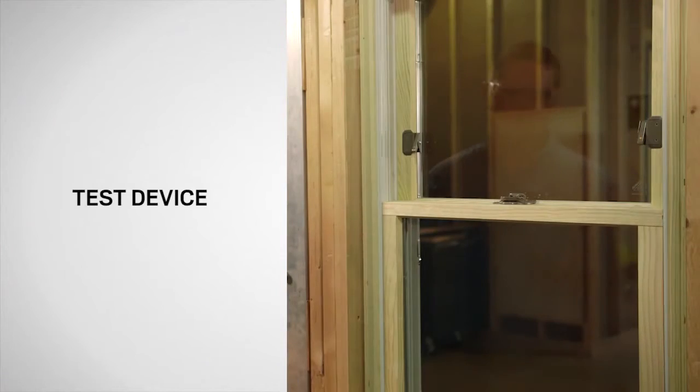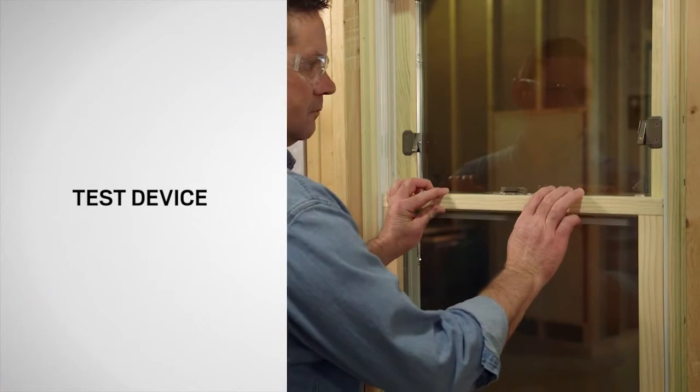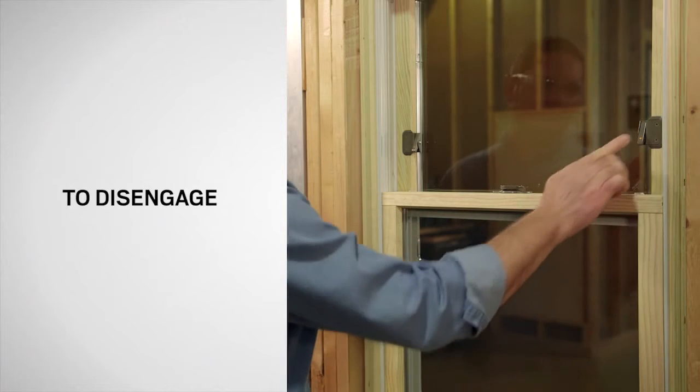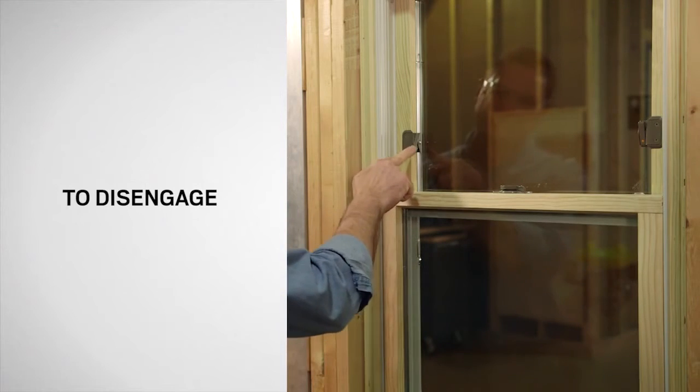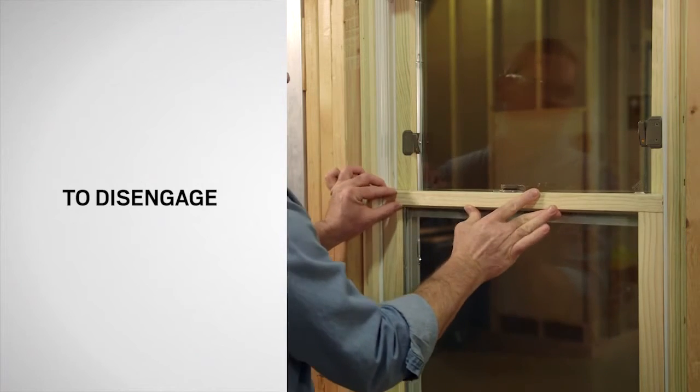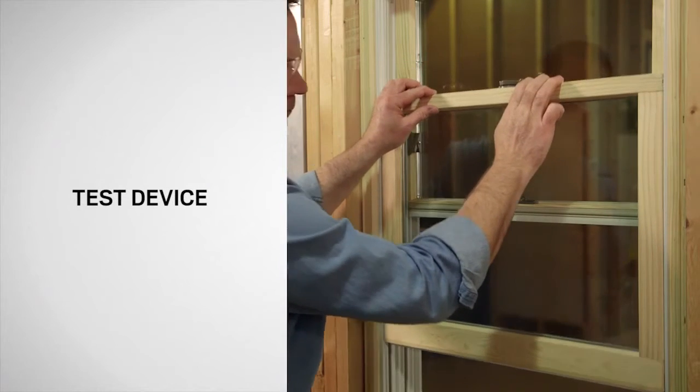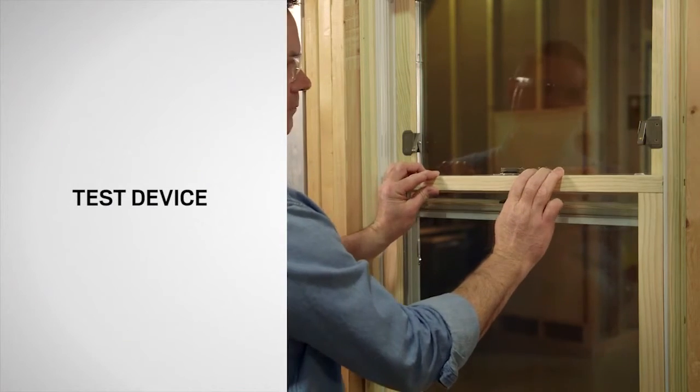Next, verify the correct operation of your window opening control device. To disengage the device, push the dot in, clearing the device from the sash path, and open the window. The device should automatically re-engage when closing the bottom sash.